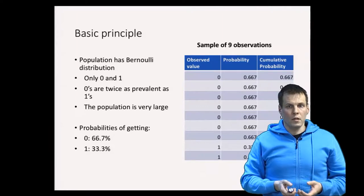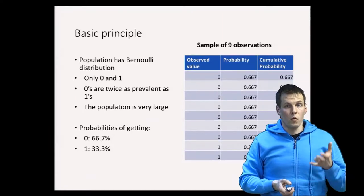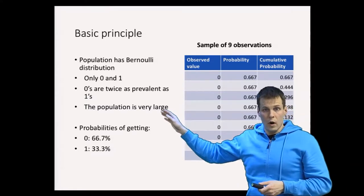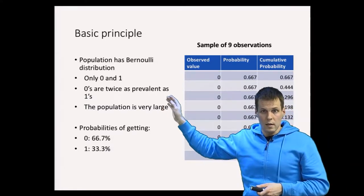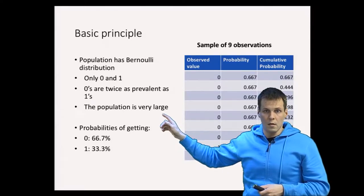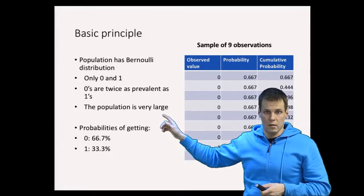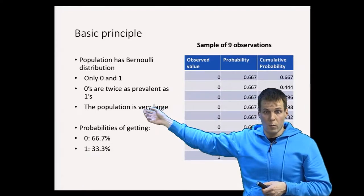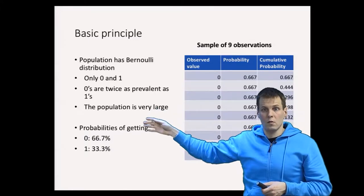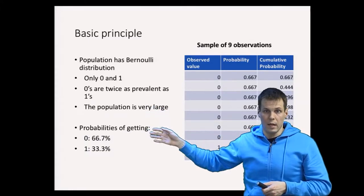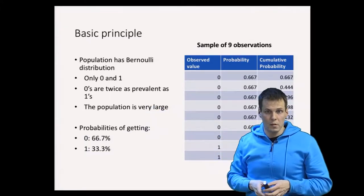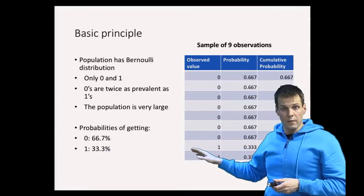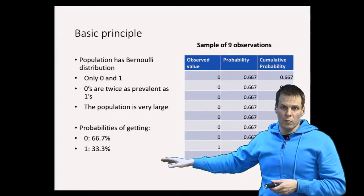The idea of a Bernoulli distribution is that we only have ones and zeros. In this example, the zeros are twice as prevalent as ones. The population is always very large in maximum likelihood estimation because when we take a sample away from the population, the ratio of ones to zeros should stay the same.